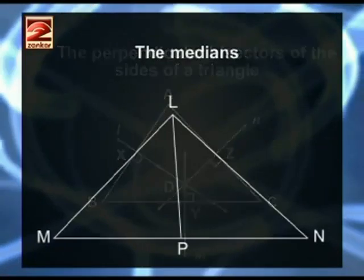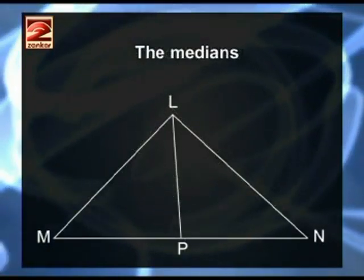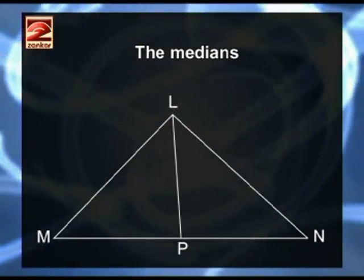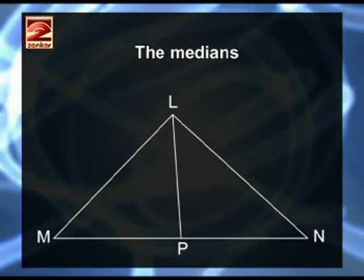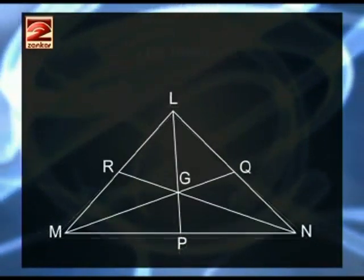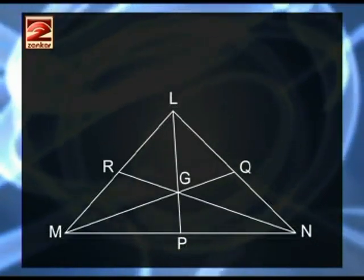Next property, the Median. The line segment joining the vertex of a triangle to the midpoint of its opposite side is called a median of the triangle. The three medians of a triangle are concurrent.